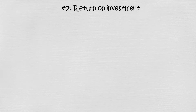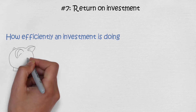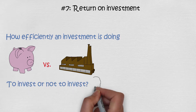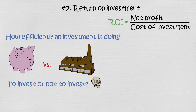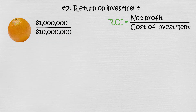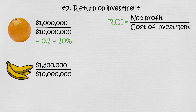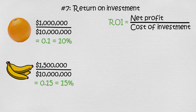Financial ratio number 7: return on investment. Return on investment shows how efficiently an investment is doing compared to other investments. With this ratio, you can compare whether other investment possibilities are better. The formula is net profit divided by cost of investment. Our company Orange has a net income of $1 million on a $10 million investment — ROI of 10%. Competitor Banana has $1.5 million net income on $10 million — ROI of 15%. So which company is better to invest in?